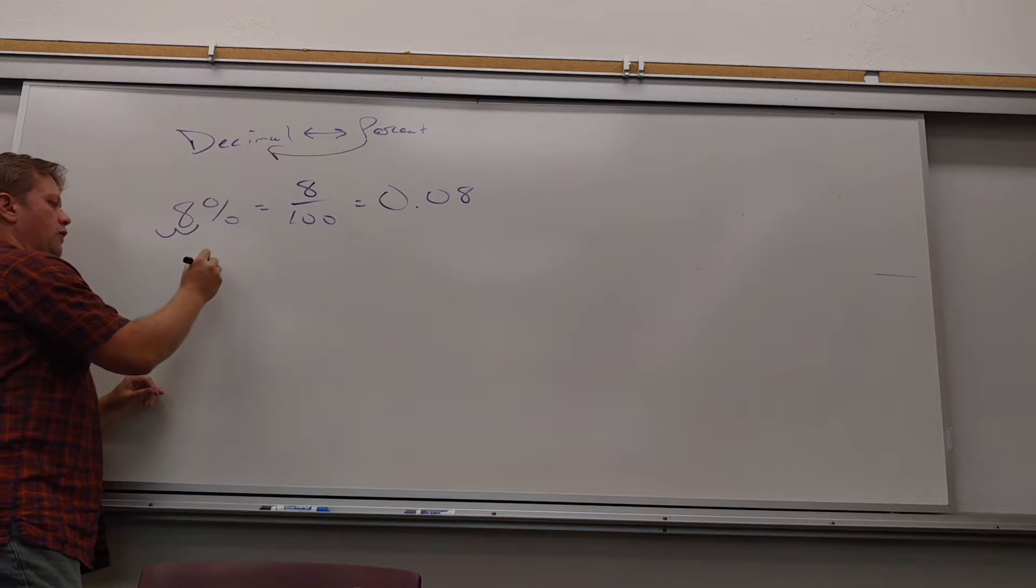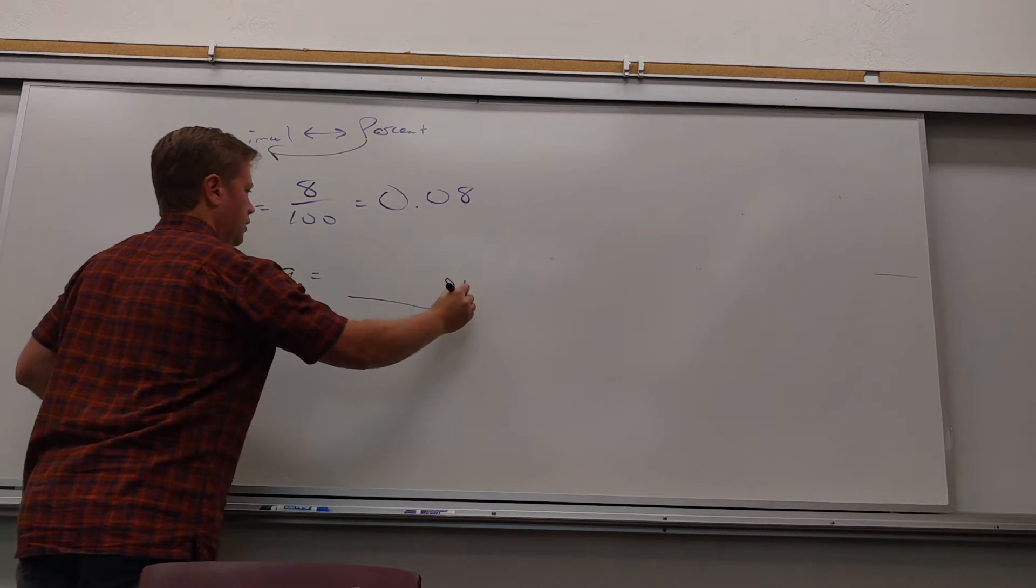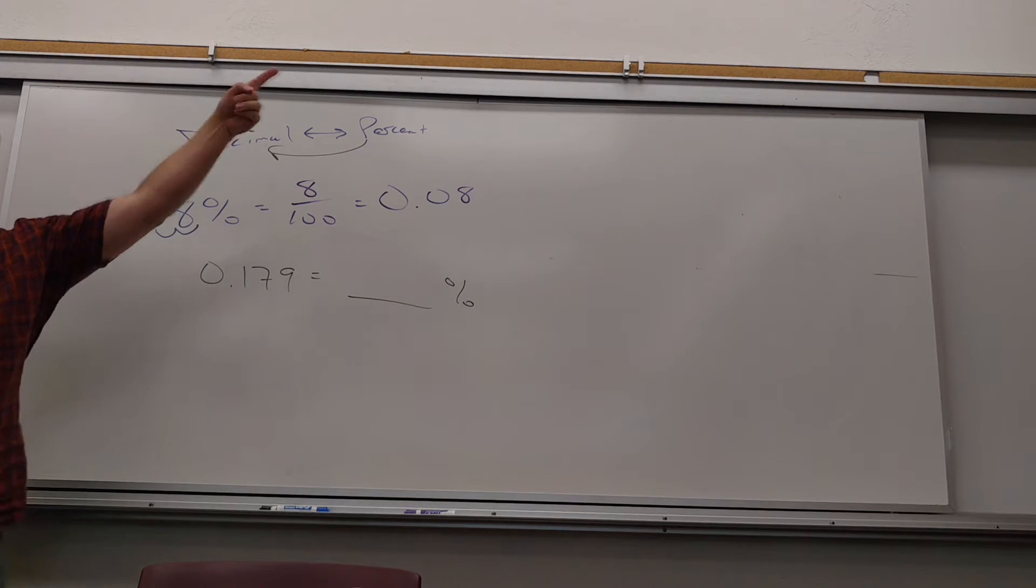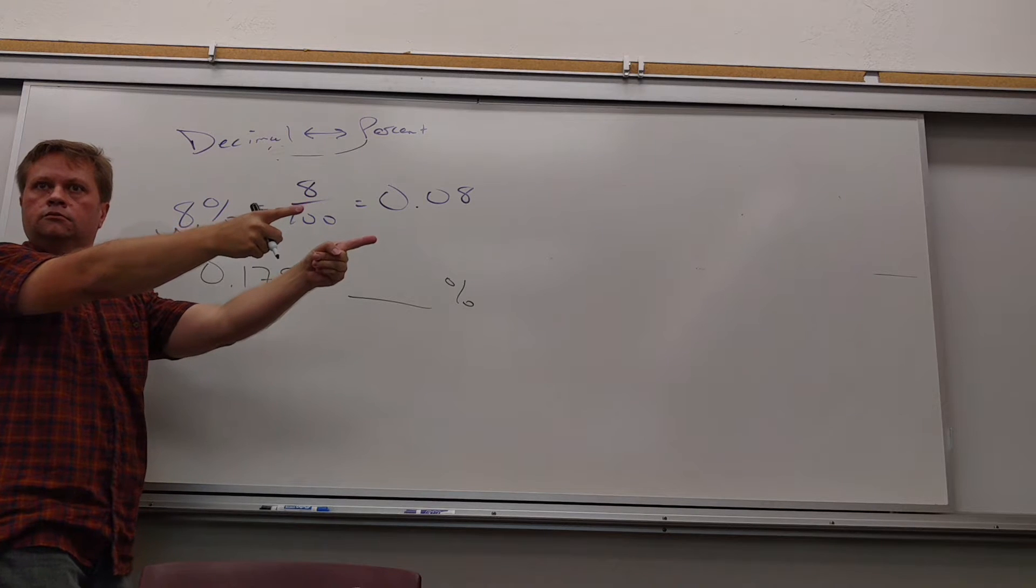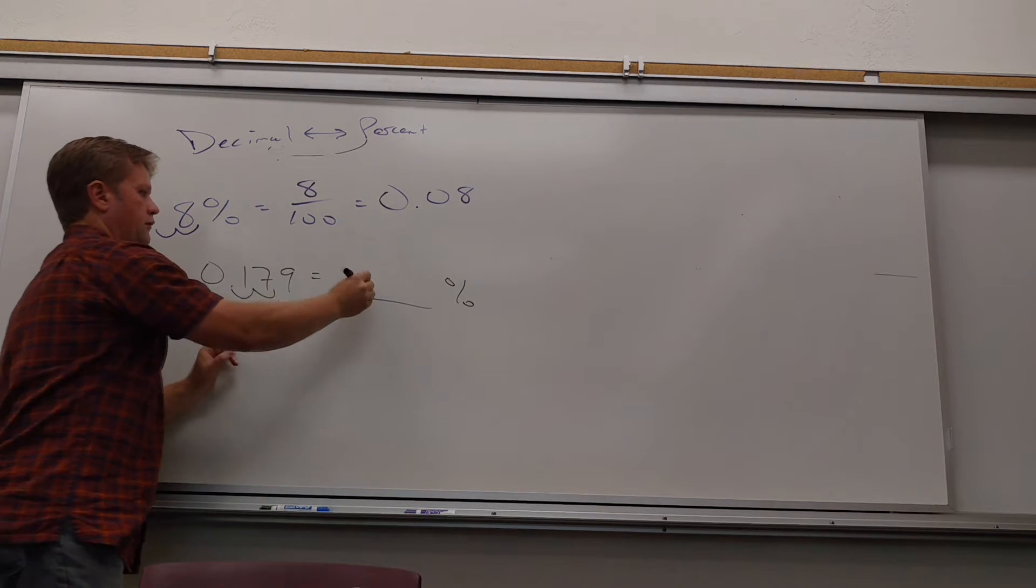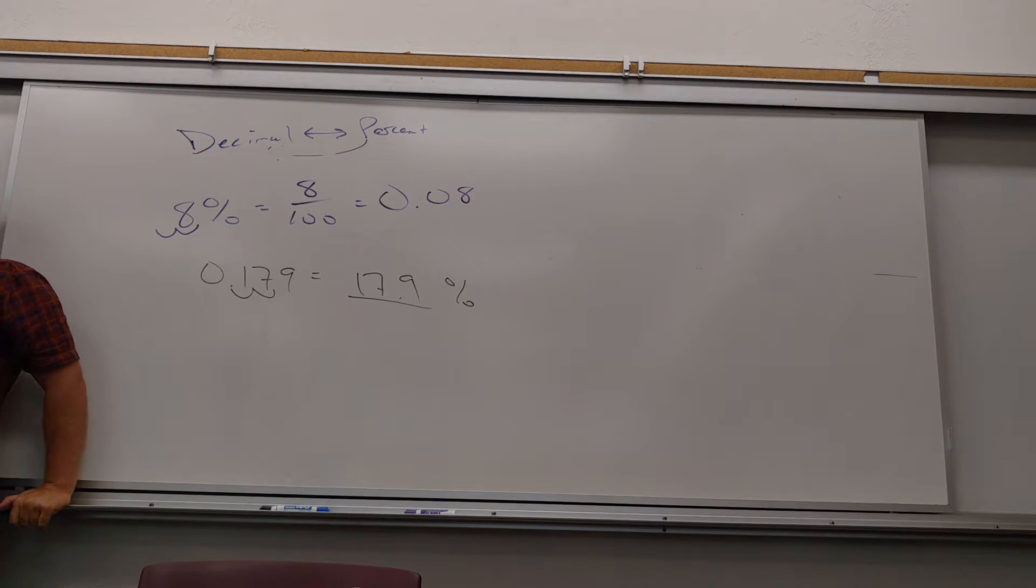Why is it two places? Because it's out of a hundred. Of course it's two places. The only question is which way do I go? So if I'm going from decimal, if I had zero point one seven nine, how do I make that into a percentage? Yeah, you move it twice that way because now I'm going decimal to percent. I want to go that way. Bam bam. Seventeen point nine percent.